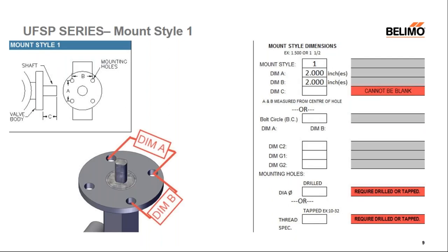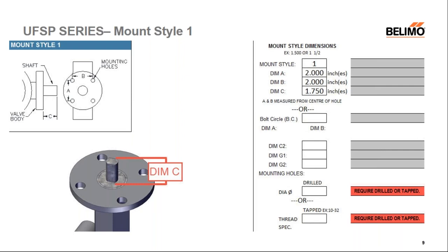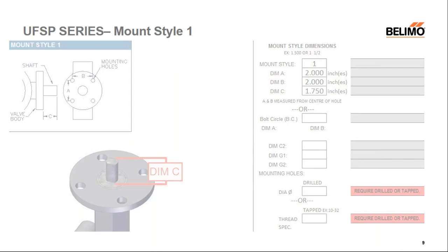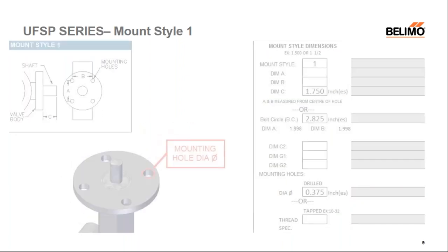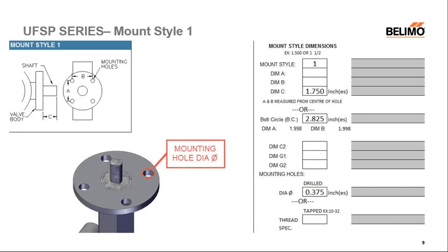For mount style one, dimension A and dimension B are measured from center of mounting hole to center of mounting hole. Dimension C is the overall height of the shaft. As an alternative to filling in the mounting hole locations, a customer who knows the bolt circle diameter — the circle passing through the center of all four mounting holes — can fill that in instead, which will clear out the required fields for dimension A and B. The mounting hole diameter can be specified as drilled or tapped, for example three-eighths of an inch drilled.